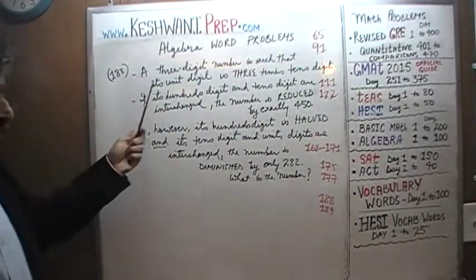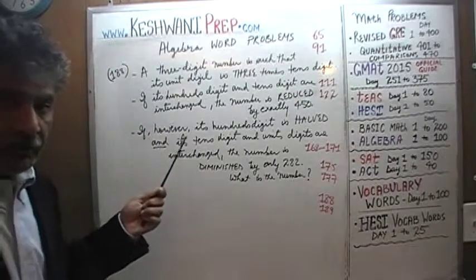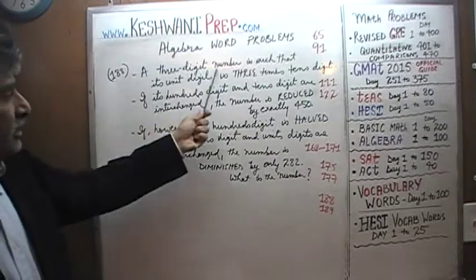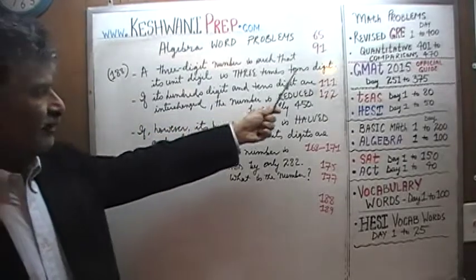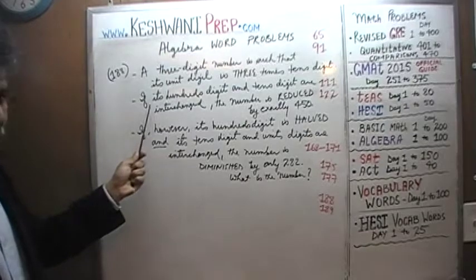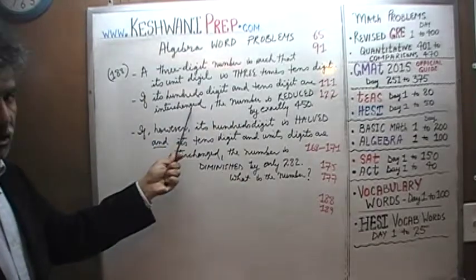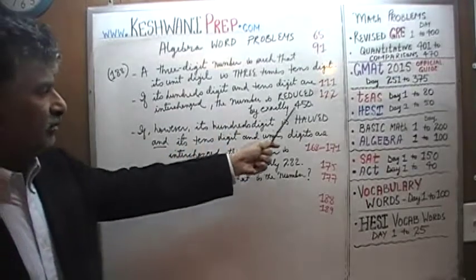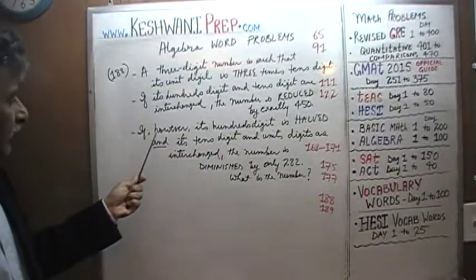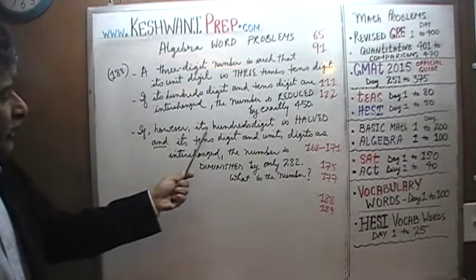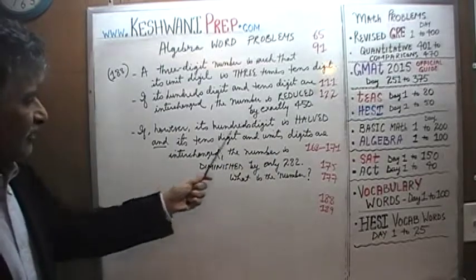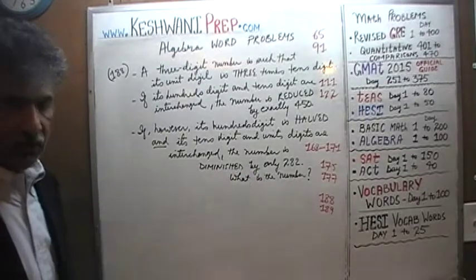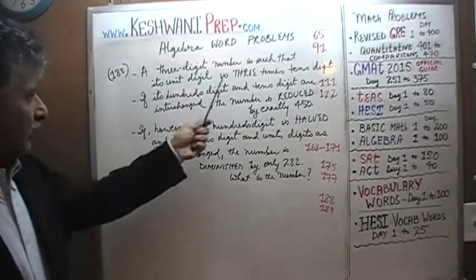Let's take a look at it. It says — I'm going to read it to you in the event that you have trouble with my handwriting — a 3-digit number is such that its unit digit is 3 times the 10th digit. We are further told that if the 100th digit and the 10th digit are interchanged, the number is reduced by 450. On the other hand, if the 100th digit is halved and its 10th digit and the unit digit are interchanged, the number is diminished by only 282. The question simply is: what is that number?